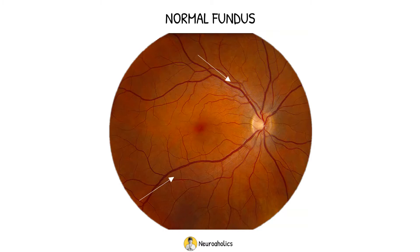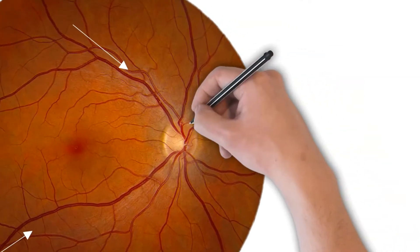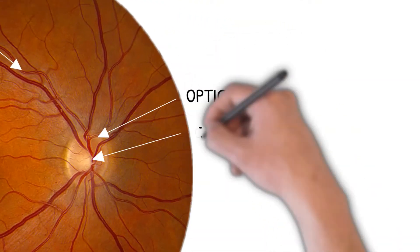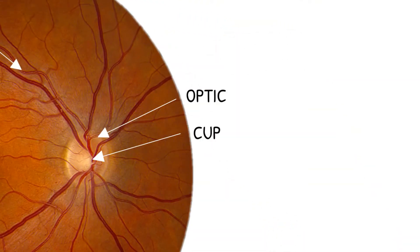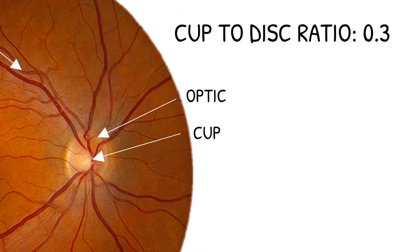The vertical height of the pale central cup of the optic nerve head is compared to the overall vertical diameter of the optic disc, giving a figure called the cup-to-disc ratio. A normal optic cup occupies about a third of the total optic nerve head, so the normal cup-to-disc ratio is 0.3.